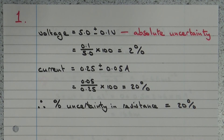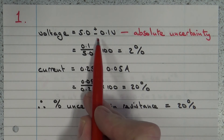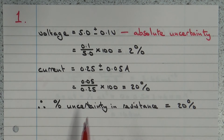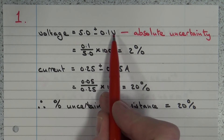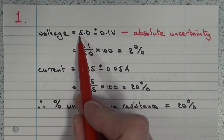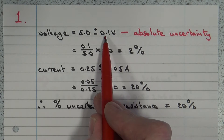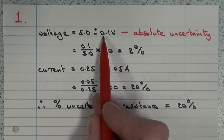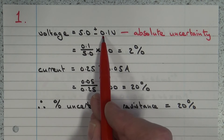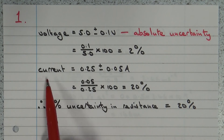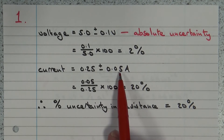The answer to question number 1 shows a voltage of 5 plus or minus 0.1 volts. The uncertainty is written with the same unit as the reading itself — that means it's not a percentage uncertainty. This is what's known as an absolute uncertainty. So we have voltage 5 ± 0.1 and current 0.25 ± 0.05 amps.